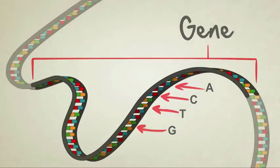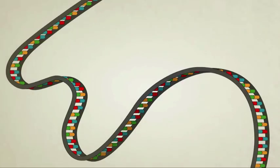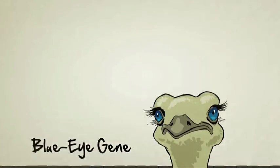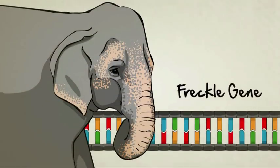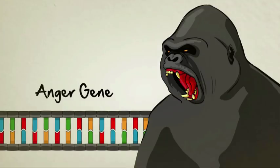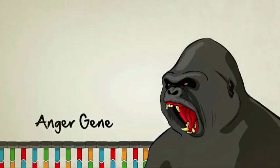A gene contains information for a cell to read and use, but what exactly does that information do? You might have heard that there's a blue-eyed gene, a freckle gene, possibly even an anger gene, but single genes don't literally make things like eyeballs or freckles or temper tantrums.